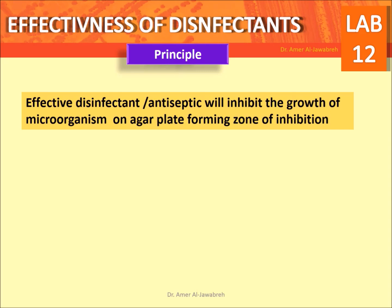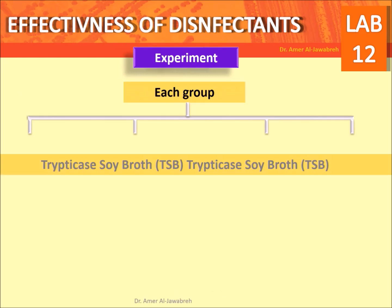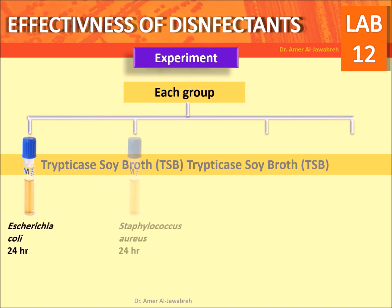For each group, provide four trypticase soy broth tubes: the first containing Escherichia coli, the second containing Staphylococcus aureus, the third containing Pseudomonas aeruginosa, and the fourth containing Bacillus subtilis.